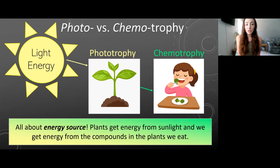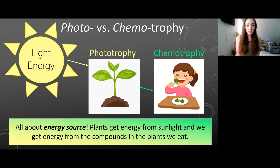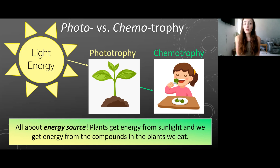I find it easiest to start with photo versus chemotrophy before we get into the rest. Photo versus chemotrophy is pretty simple to remember because photo means light, and phototrophy is just getting your energy from light. So it's all about energy source. When organisms get energy from light, they are phototrophs, and when they get their energy from chemicals, then they're chemotrophs.